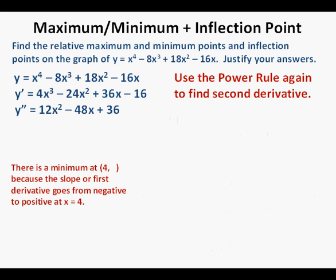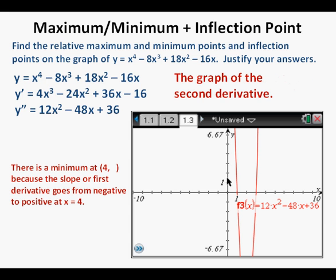Next we use the power rule again to get the second derivative, which is our way to finding inflection points. The second derivative is y double prime equals 12x squared minus 48x plus 36. Here's the function for the second derivative graphed in the calculator.